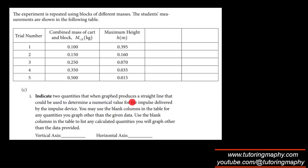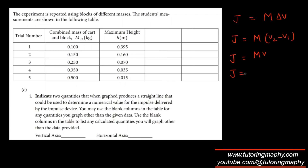To determine the impulse delivered, we know that impulse J equals M times delta V. Since V1 is zero, J equals MV, which means V equals J times (1/M). So the graph should be between velocity and 1 over M, giving a straight line where the slope is J.